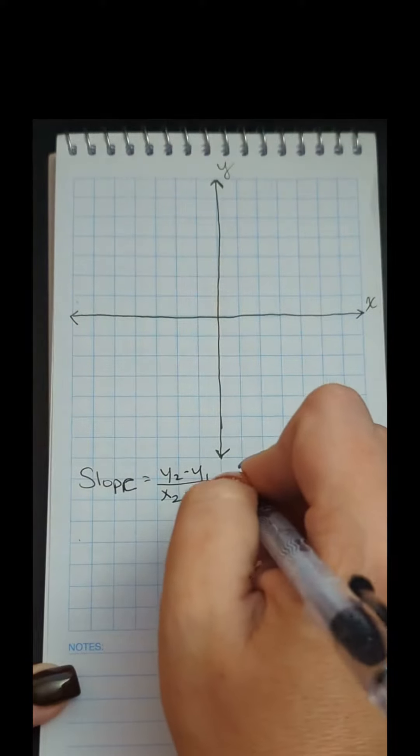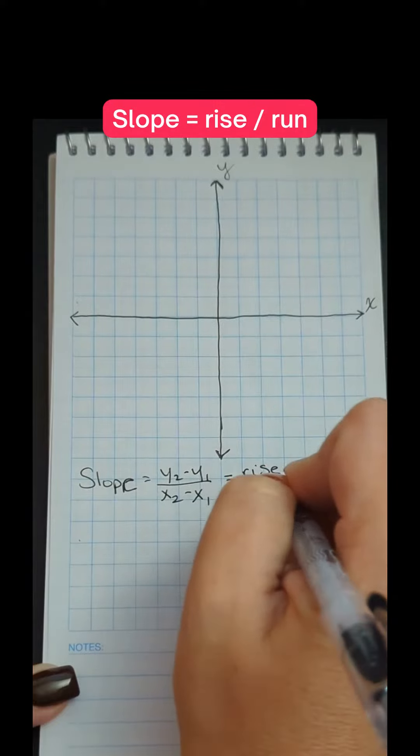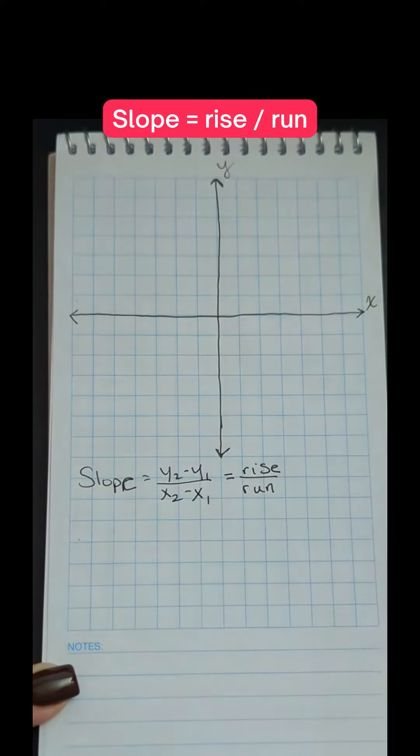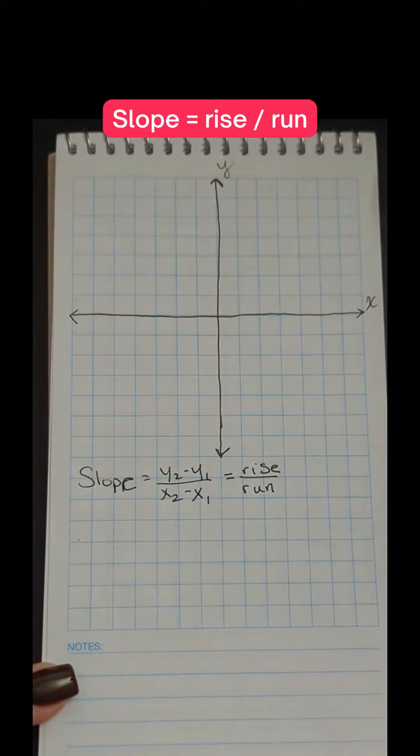In English, we also have said many times slope equals rise over run. Was there another memory aid for that in the part of the world where you grew up or in a different language that you speak?